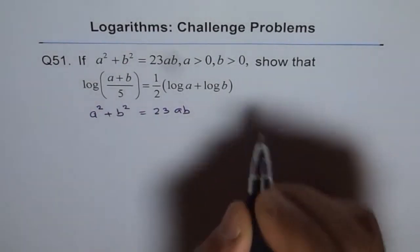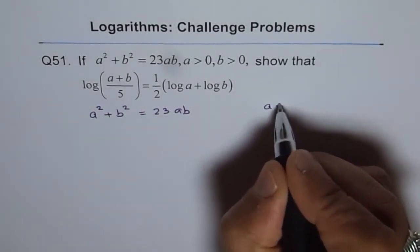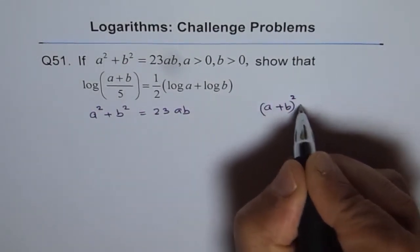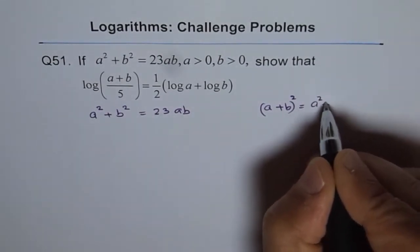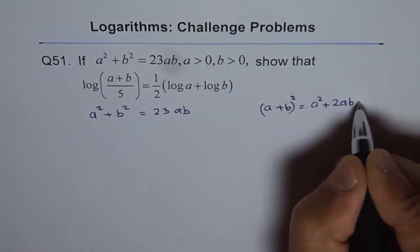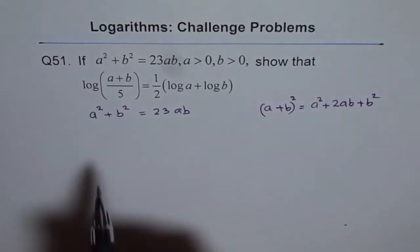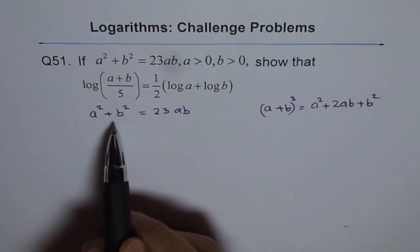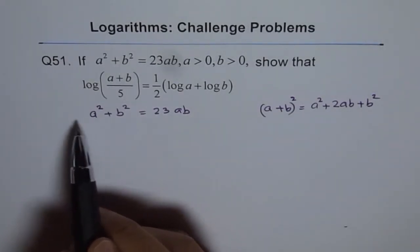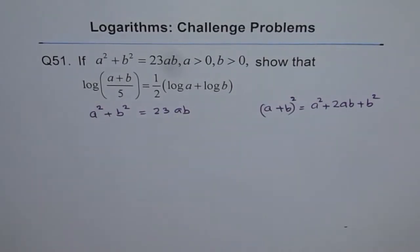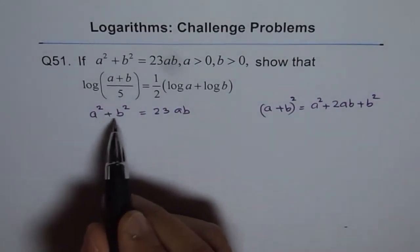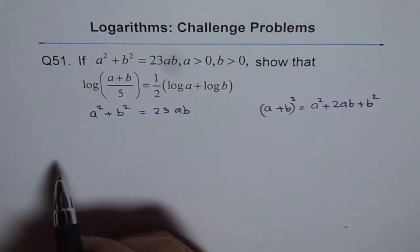Do you know what is a plus b whole square? a plus b whole square actually equals a square plus 2ab plus b square. If you notice, we are missing 2ab here. So if I add 2ab on both sides, then I can make this a perfect square.